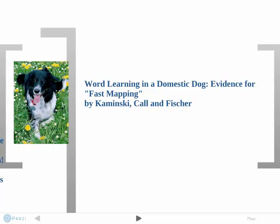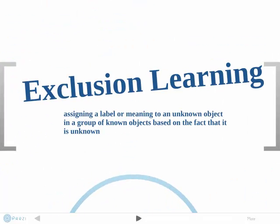To prove that language acquisition does indeed occur in the brain, linguists Kaminsky, Kahl, and Fischer conducted the experiment 'Word Learning in a Domestic Dog: Evidence for Fast Mapping.' They proved this by showing that a Border Collie named Rico can learn new words through exclusion learning — assigning a label to an unknown object within a group of known objects based on the fact that it is unknown. This is a fast mapping technique because the brain constructs meaning for an object without being given its actual definition.